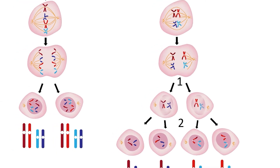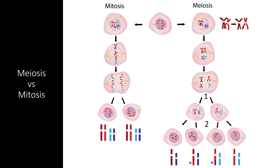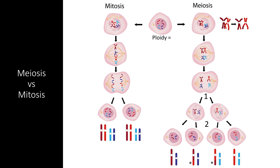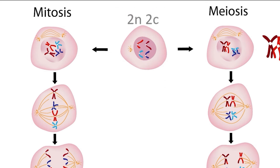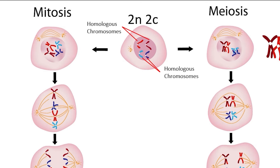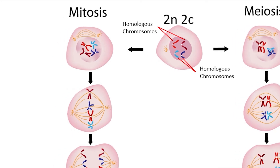Now, let's consider how these two different processes affect the ploidy level of cells. Ploidy can be measured in two different ways: by the genetic content, denoted N, or by the number of copies of each chromosome, denoted C. When a cell enters G1 phase and before it replicates its DNA in S phase, the cell is 2N and 2C. In other words, the cell has two copies of the genetic code, or two alleles for each gene, and two copies of each gene. There are two homologous chromosomes from each parent, which can carry different alleles and also constitute separate copies of the same chromosome. Let's see what happens during mitosis.